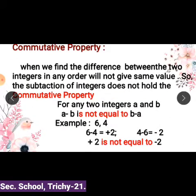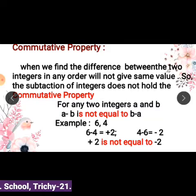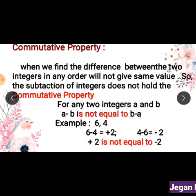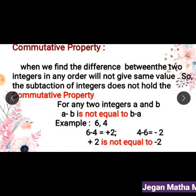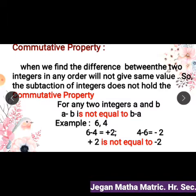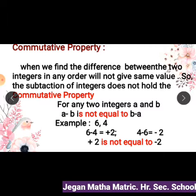Next, when we find the difference between two integers in any order, it will not give the same value. For any two integers a and b, a minus b is not equal to b minus a. For example, let us consider two integers 6 and 4. First, 6 minus 4 equals plus 2. Then 4 minus 6 equals minus 2. Here plus 2 is not equal to minus 2. So, the subtraction of integers does not hold the commutative property.